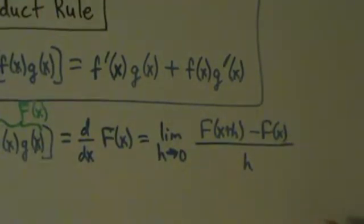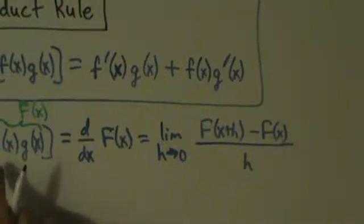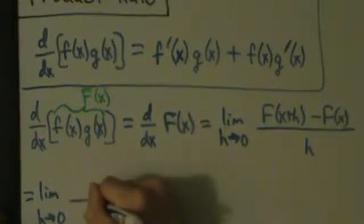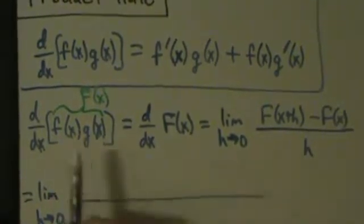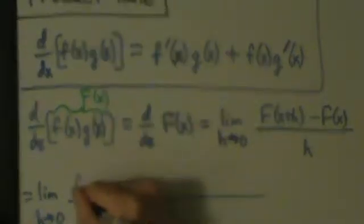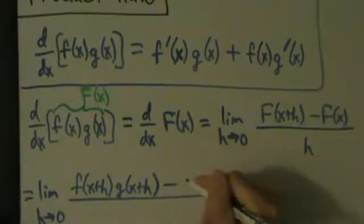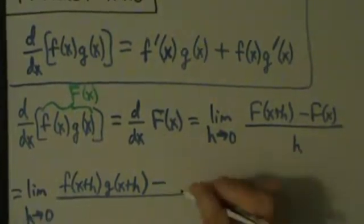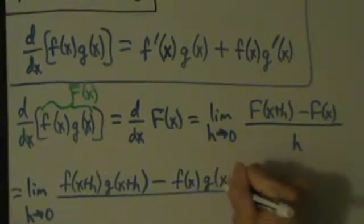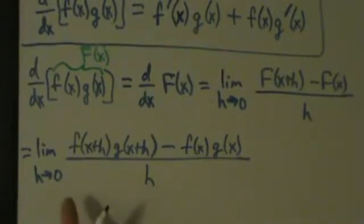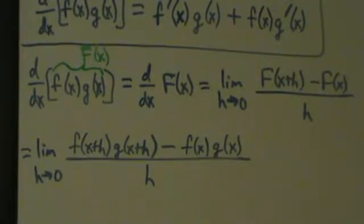Now let's substitute back in terms of little f and little g. This equals the limit as h goes to 0 of big F(x+h) — which is f(x+h)·g(x+h) — minus big F(x), which is f(x)·g(x), all over h. Notice this is not the same thing as the derivative of f times the derivative of g. So we're stuck with this for now, but from here there are a couple of different routes to take.